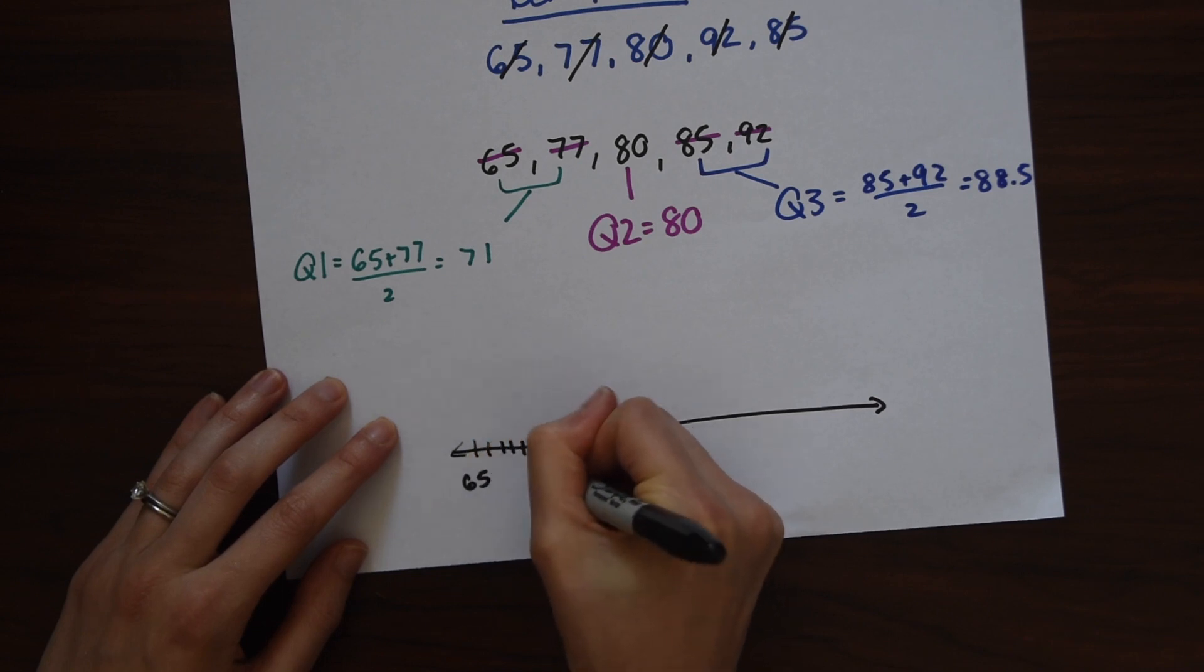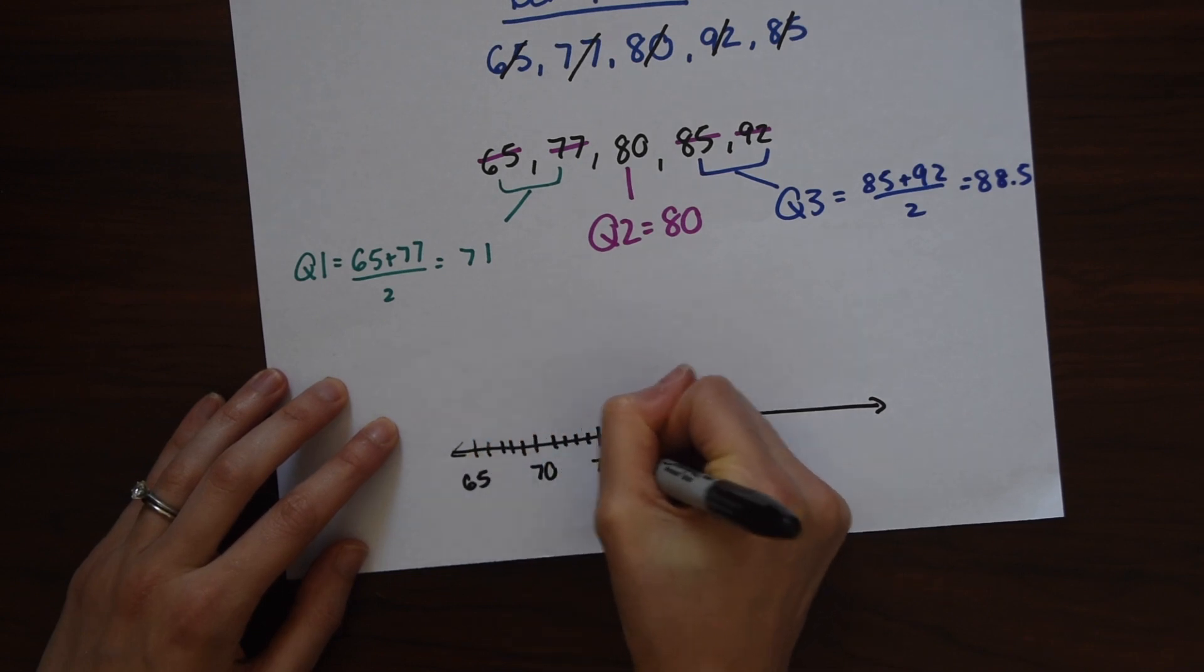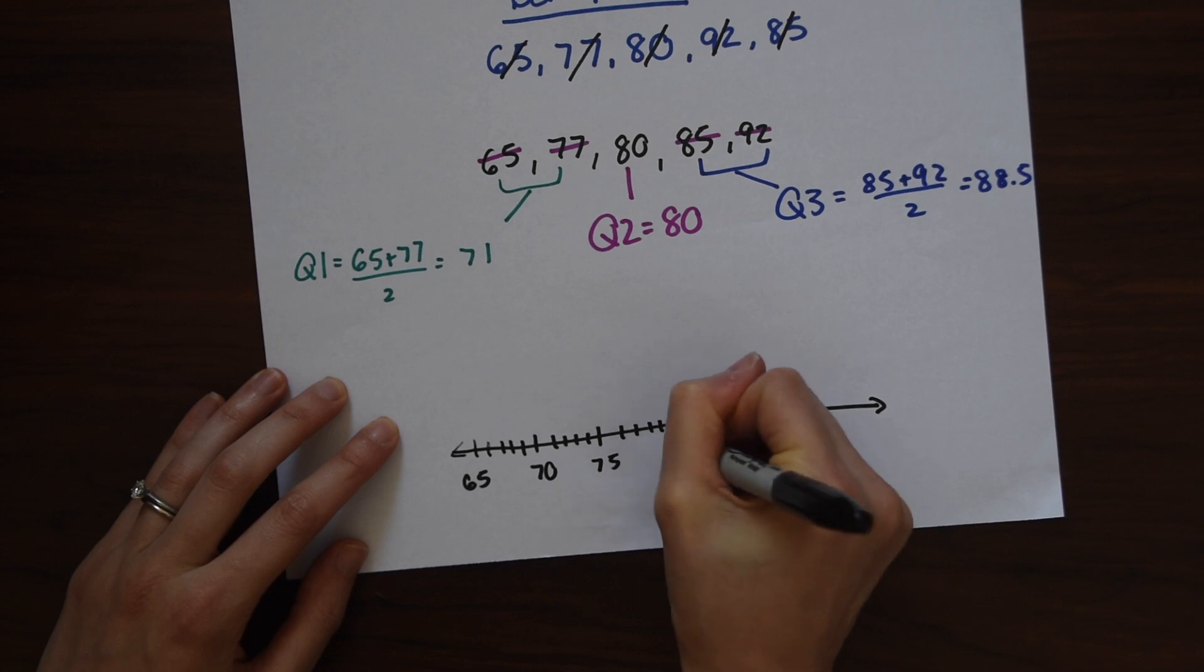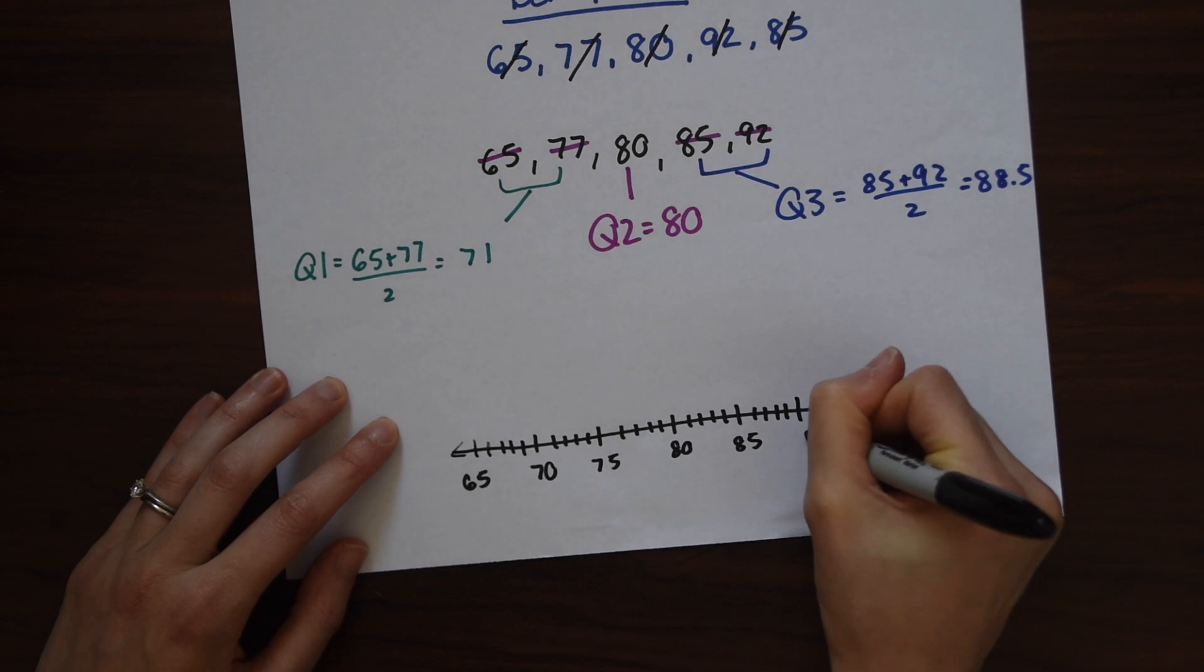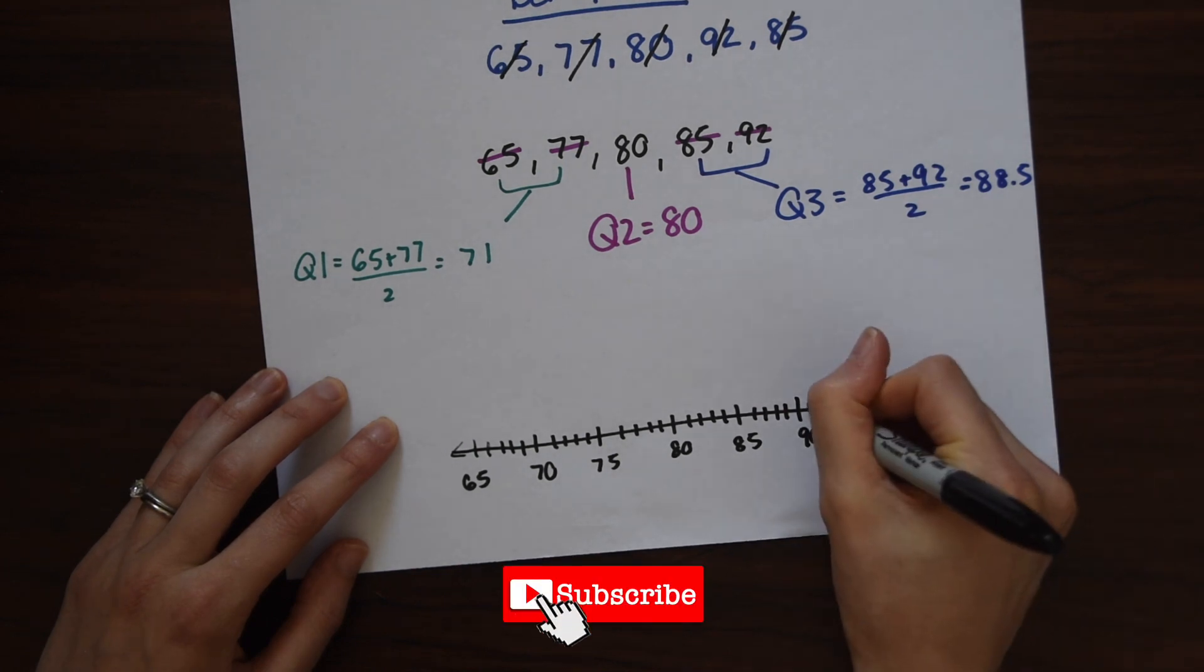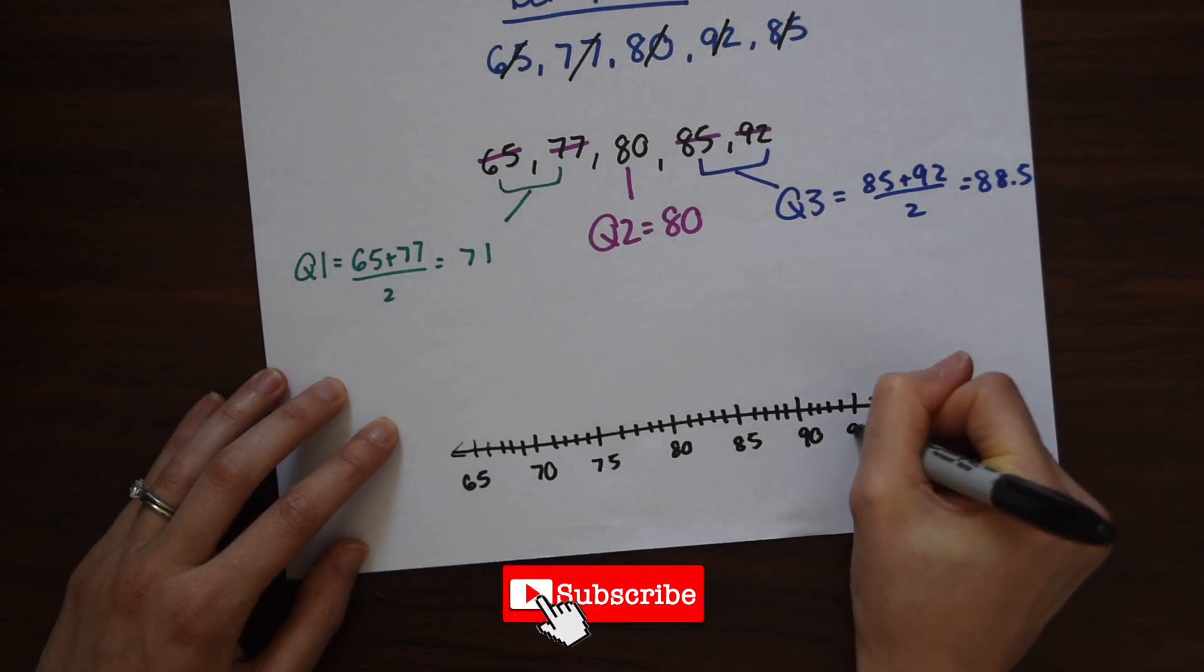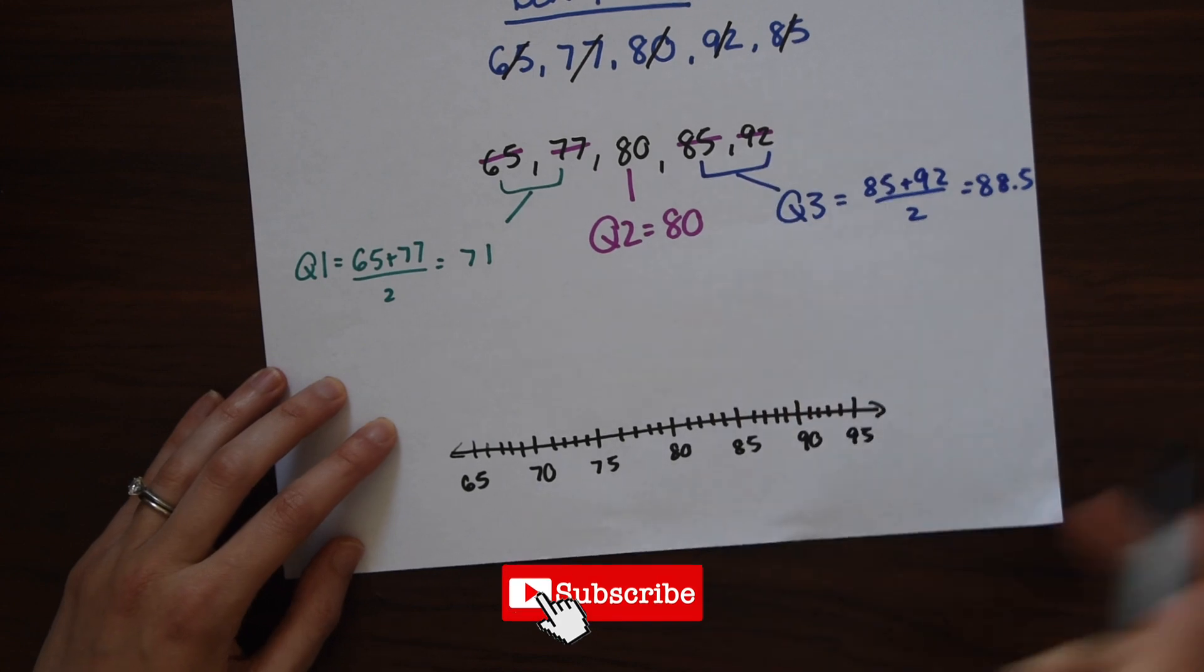70, 75, 80, 85, 90. Let's go up to 95 so we can include 92 in there.